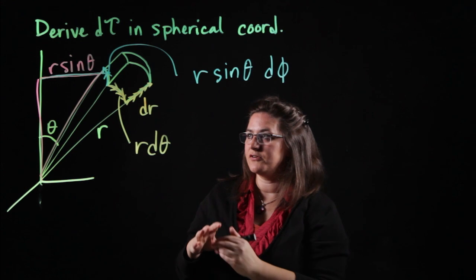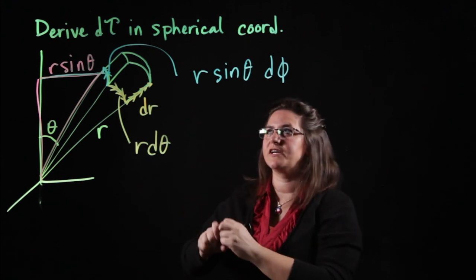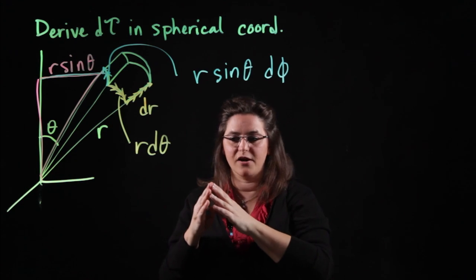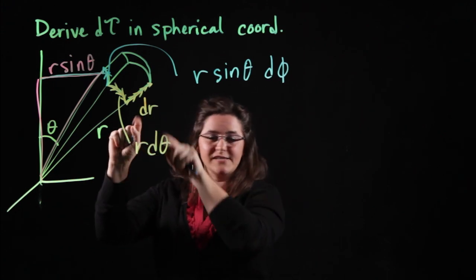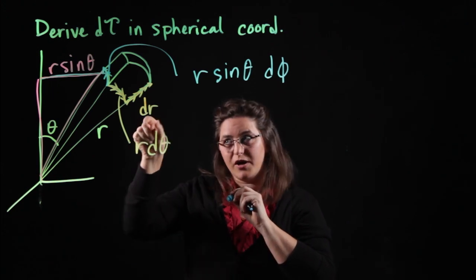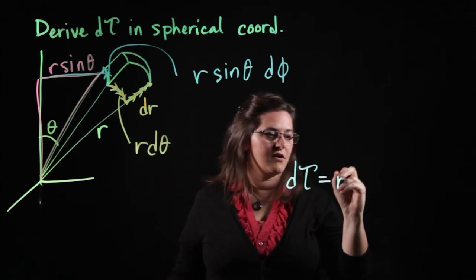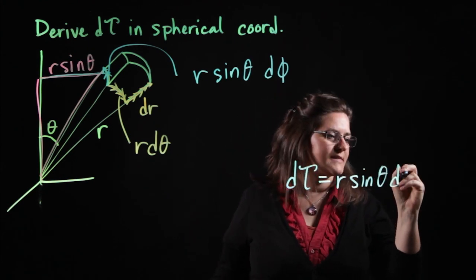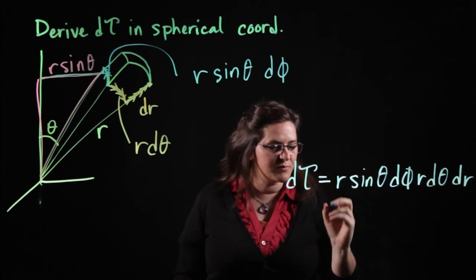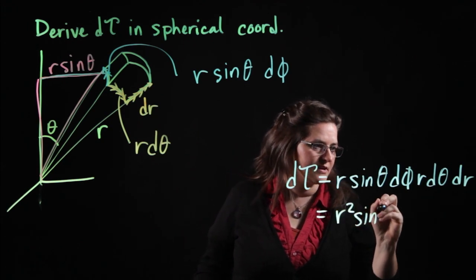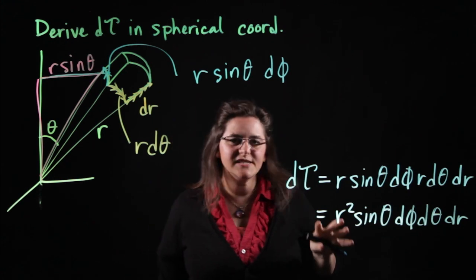Now we put all these side lengths together, just like we did with dx, dy, dz to make d tau in Cartesian coordinates, we're going to do the same thing to find d tau in spherical coordinates. Remember that it must have units of length cubed. This has units of length because of the r, this has units of length because of the r, and dr has units of length. So d tau equals r sine theta times r d theta times dr. Simplifying, I get r squared sine theta d phi d theta dr. And that's d tau in spherical coordinates.